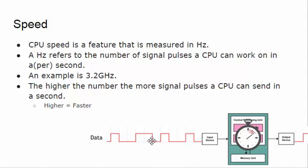3.2 gigahertz would mean that we can send 3.2 billion of these signal pulses, and that CPU can handle that in one second or in one cycle. Let me stick to seconds just to make it easy for us right now.